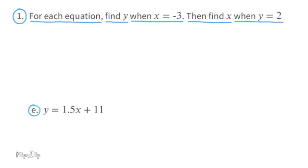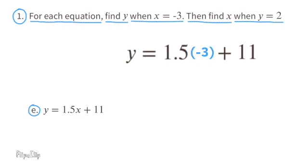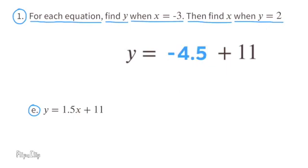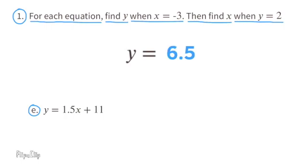Part e: y equals 1.5x plus 11. Substitute x with negative 3: 1.5 times negative 3 equals negative 4.5. So y equals negative 4.5 plus 11, which equals 11 minus 4.5, and 11 minus 4.5 is 6.5. So y equals 6.5 when x equals negative 3.